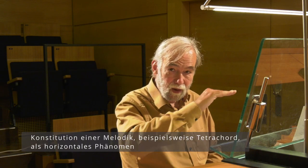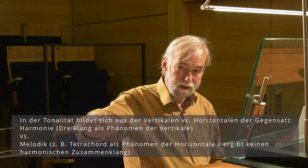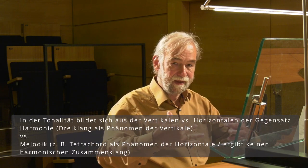Dreiklänge sind also vertikale Phänomene. Eine Linie dagegen ist ein horizontales Phänomen. Dieses horizontale Phänomen hätte für Johann Sebastian Bach keinen Zusammenklang bedeuten können; ein Dreiklang freilich schon. Deshalb tut sich hier musiktheoretisch ein klarer Gegensatz auf: zwischen der Vertikalen, geboren aus dem Dreiklang, und der Horizontalen, geboren aus der linearen Entwicklung. Linearität und Dreiklang sind also quasi ein Gegensatz. Insofern macht es Sinn, musikalische Strukturen in den Kategorien von Vertikale und Horizontale zu analysieren und zu reflektieren.